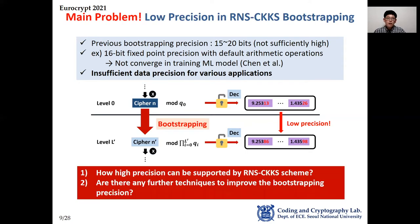Thus our key question is: how high a precision can be supported by the RNS-CKKS scheme, and are there any further techniques to improve the bootstrapping precision?